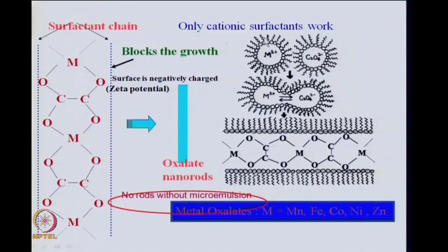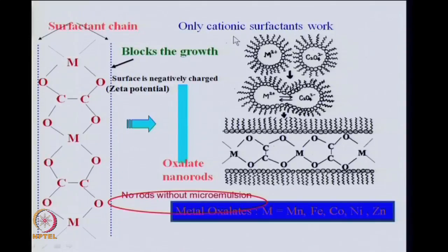The surface of these rods is negatively charged, which can be measured using zeta potential measurements. Since they are negative, they attract the positive head group of cationic surfactants like CTAB, and growth proceeds along one direction, giving nano rods of metal oxalates. If you do not use a surfactant — that is, if you do not use micro emulsion — you will not get rods. This applies to iron, nickel, cobalt, zinc, and manganese — all form metal oxalates with rod-like structures due to the cationic surfactant.